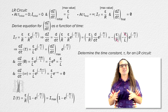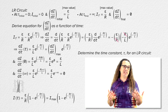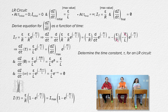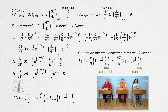Please determine what the time constant for an LR circuit equals. The time constant for an LR circuit — remember, in these types of equations, the time constant goes in the denominator of the expression which E is raised to. That means current as a function of time equals EMF divided by resistance times the quantity 1 minus E to the power negative time over time constant. And the time rate of change of current as a function of time equals EMF over inductance, all times E to the power negative time over time constant.